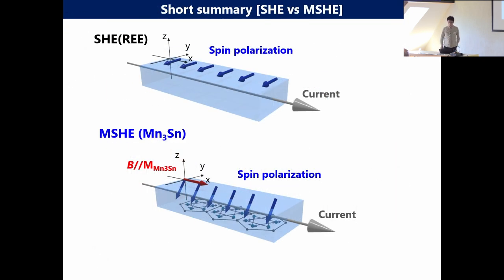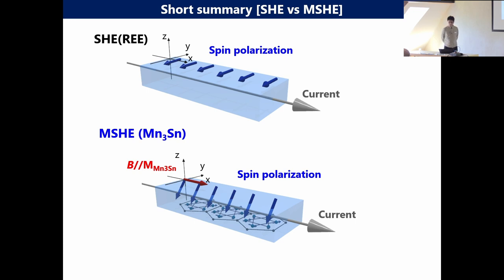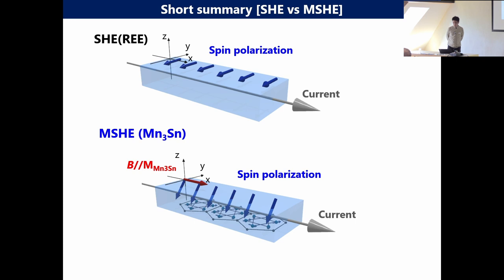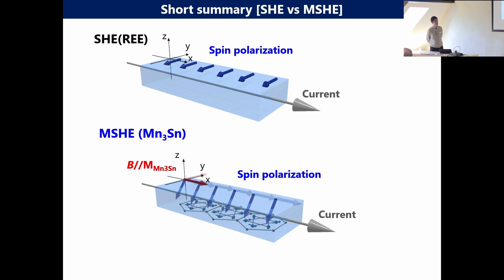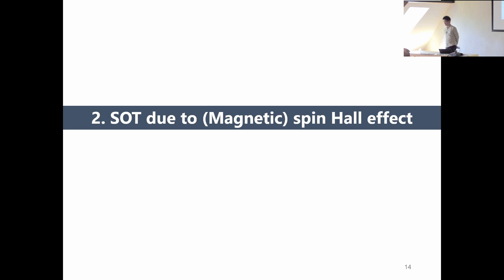We can control the spin accumulation vector by controlling the magnetization of Mn3Sn. We call this the magnetic spin Hall effect. To understand this kind of angular dependence, we calculated the spin accumulation by using a very simple toy model. This is the calculated result, where Sx, Sy, and Sz are each component of the spin. By controlling the magnetization direction of Mn3Sn, the spin components change systematically — consistent with our experimental result.